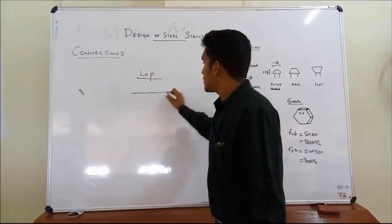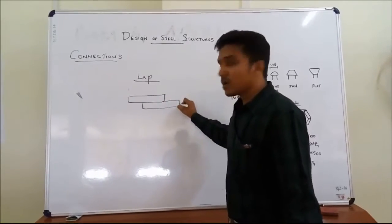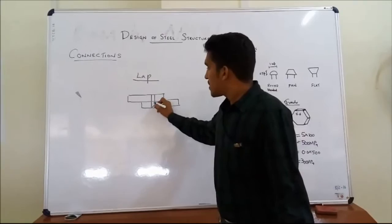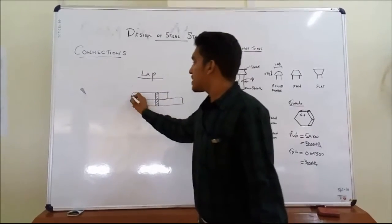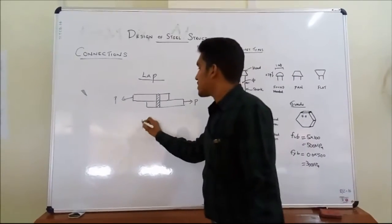Let's see how the lap joint or butt joint looks. Lap joint includes, as the name suggests, lapping of one member over the other. This is how a lap joint is provided. This is how the force is acting on. Similarly, a butt.